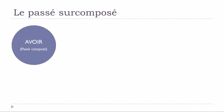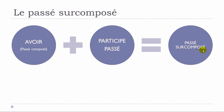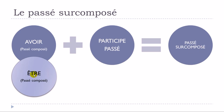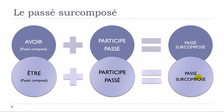To summarize: the passé surcomposé is formed with avoir (or être for exceptions) at the passé composé, followed by the participe passé — just like other compound tenses in French. It is quite rare nowadays, but now you know how it works. If you ever read or hear a passé surcomposé, you will recognize it. Have a great day — au revoir et à bientôt!